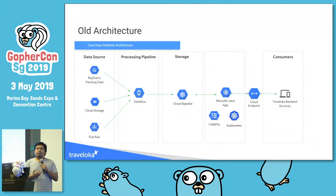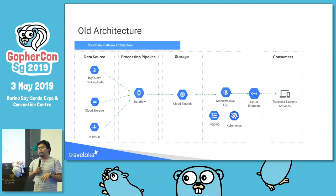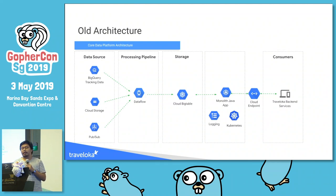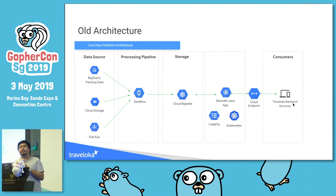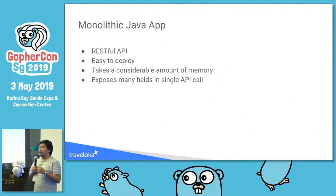This is the architecture we have. We have an ETL pipeline — we crunch data from BigQuery, Cloud Storage, and Pub/Sub using Dataflow, and we put everything into Bigtable. From Bigtable, we have a monolithic Java app which pulls and serves the data through our RESTful API. We have Cloud Endpoints to secure the API, and the data is accessed by Traveloka backend services.